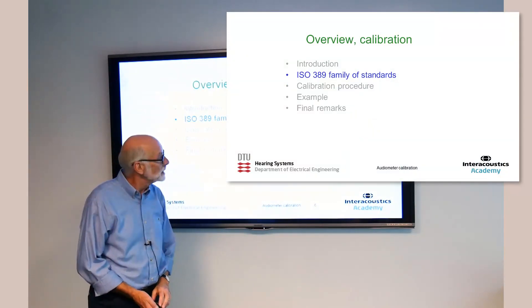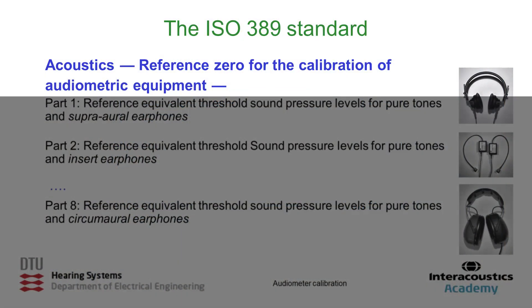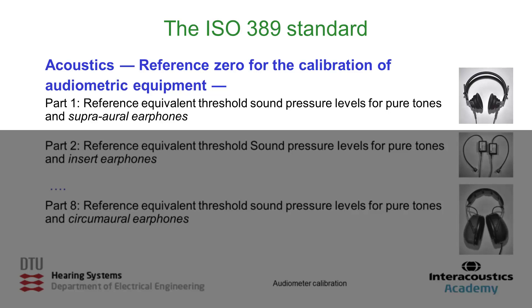This family of standards has the main title: 'Acoustics — Reference zero for the calibration of audiometric equipment.' Part one is titled 'Reference Equivalent Threshold Sound Pressure Levels for Pure Tones and Supraaural Earphones' — earphones sitting on top of the pinna. The meaning is simply to specify how much level you need to measure in your ear simulator in order to calibrate correctly.